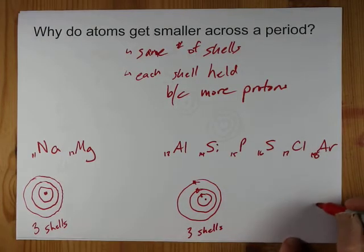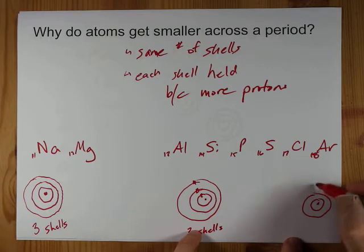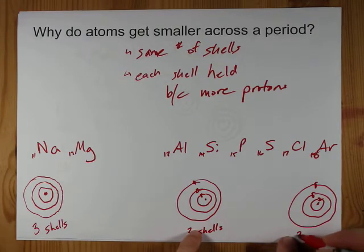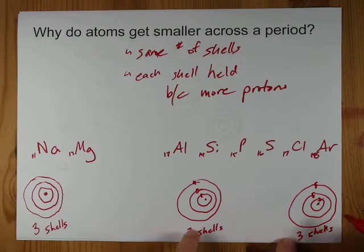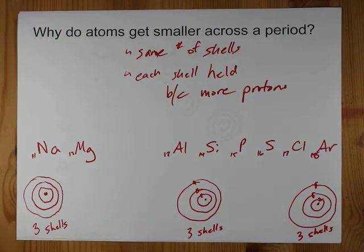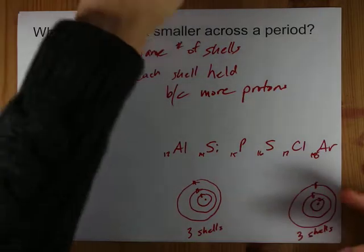And argon, nucleus, two electrons, eight electrons, eight electrons. A full outer shell, but still only three shells are occupied with electrons. So what's the real difference between these two?